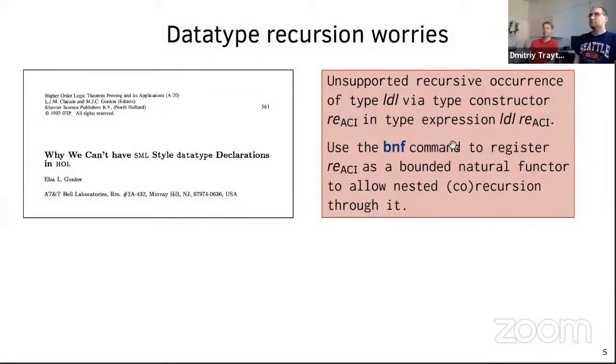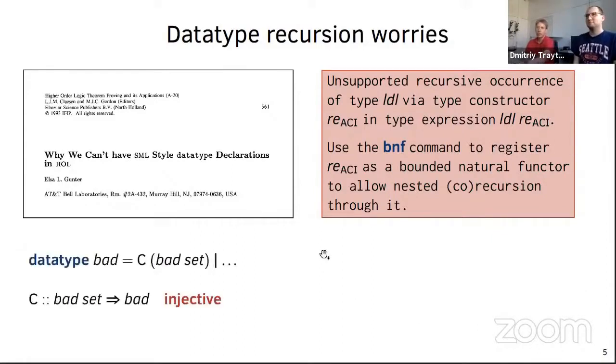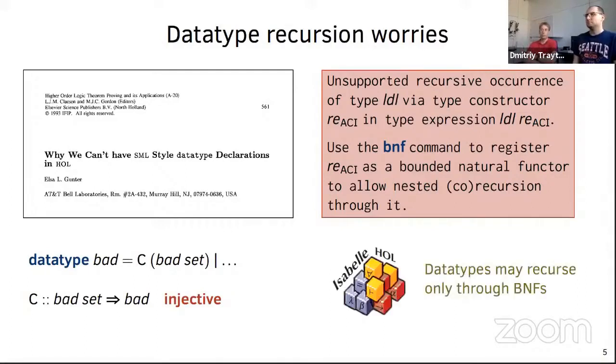Let me briefly explain why we have this restriction in place. That goes back to a paper by Ulzer-Gunter in the mid-90s. If we were to allow arbitrary recursion, we could write something like this bad data type, where the recursion goes through the set type constructor. We get an injection from a power set into the set of values. There is no such solution in the standard set theoretic model of HOL, so we would get an inconsistent logic if we allowed that.